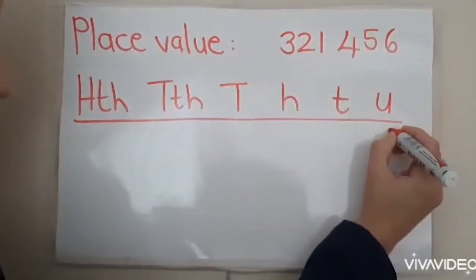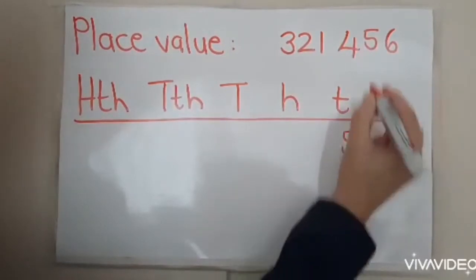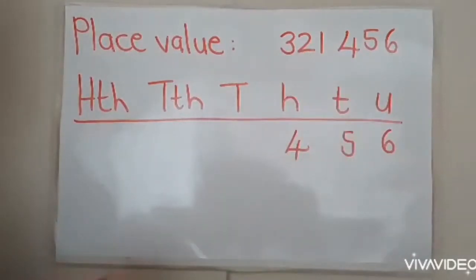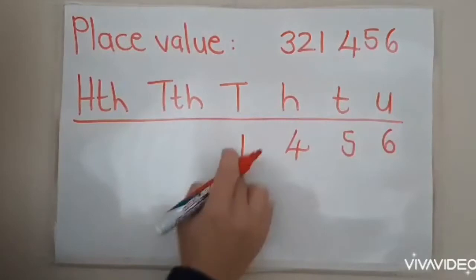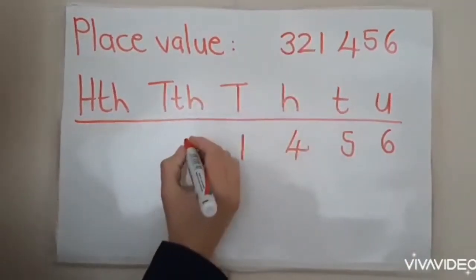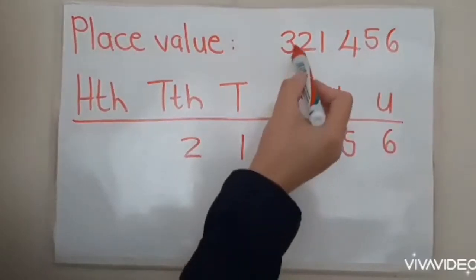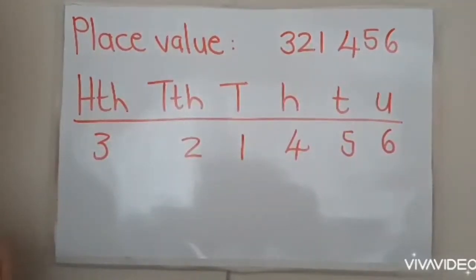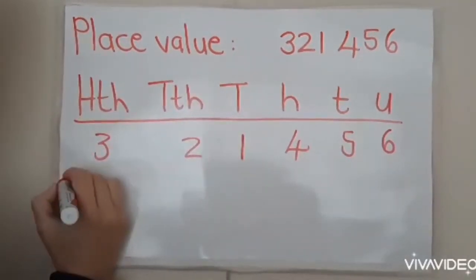So let's go and put that big number under the correct place value. So the six goes under units, the five under tens which is fifty, then the four under hundreds which is four hundred, one under thousands which is one thousand, the two under ten thousands which is twenty thousand, and then the three under hundred thousands which means it's three hundred thousand.